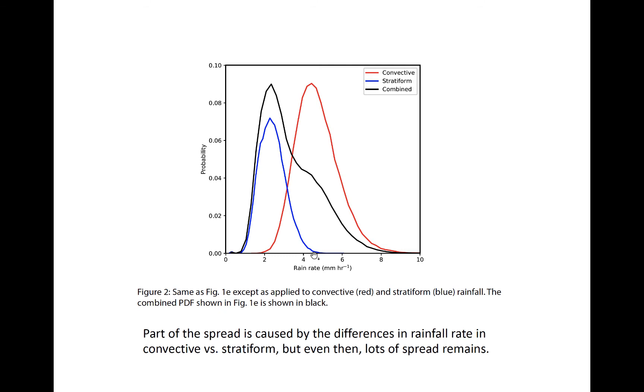While convective rainfall with the same reflectivity typically rains at about two to eight millimeters per hour. Thus, the primary peak in the total PDF, which is the black line, is mainly caused by stratiform rain and the long tail in the distribution with small bump near four to five millimeters per hour, is caused by convective rainfall having the same reflectivity.